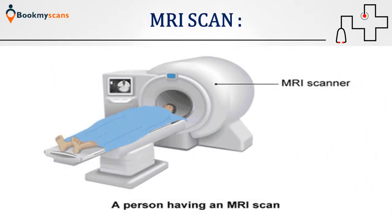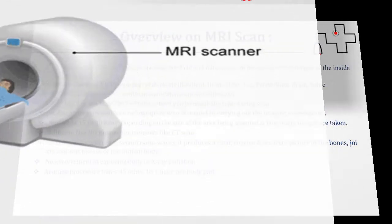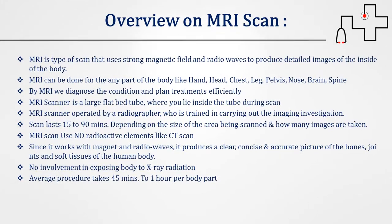MRI is a type of scan that uses a strong magnetic field and radio waves to produce detailed images of the inside of the body. MRI can be done for any part of the body — such as the hand, head, chest, leg, pelvis, nose, brain and spine. By MRI, we can diagnose conditions and plan treatments efficiently.